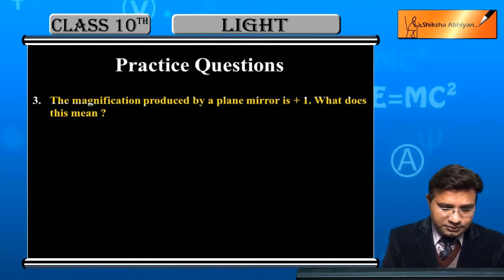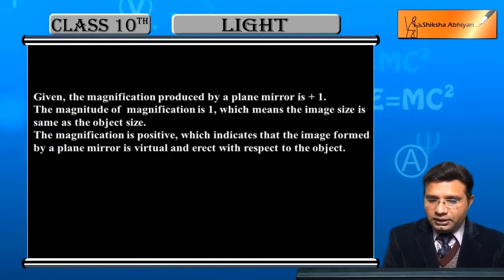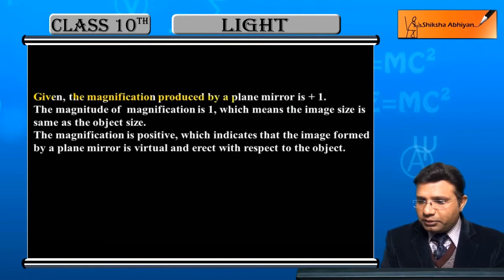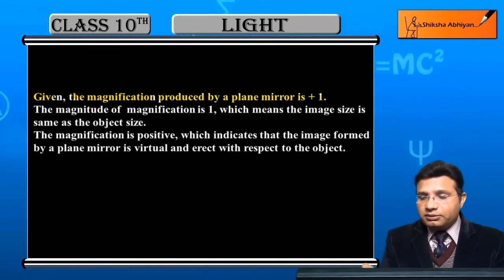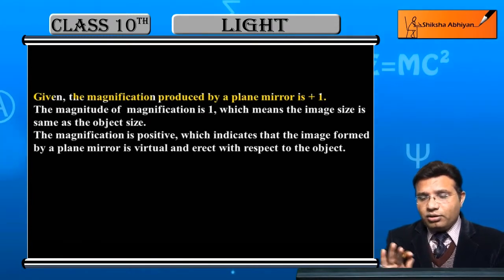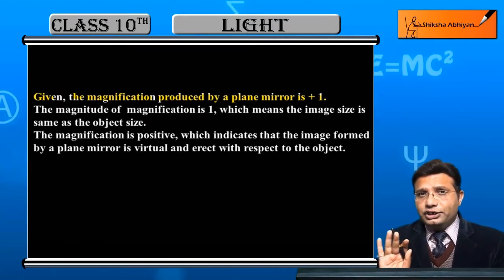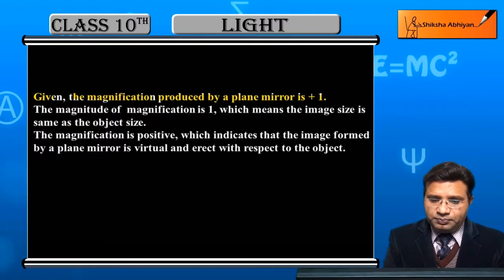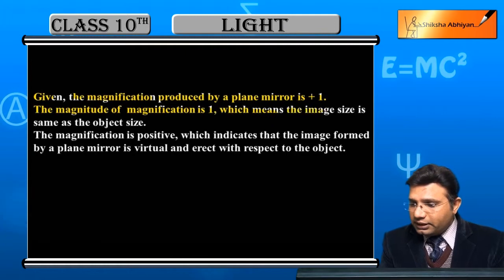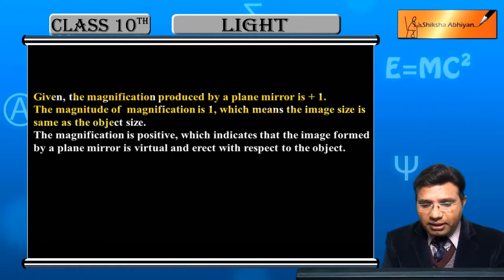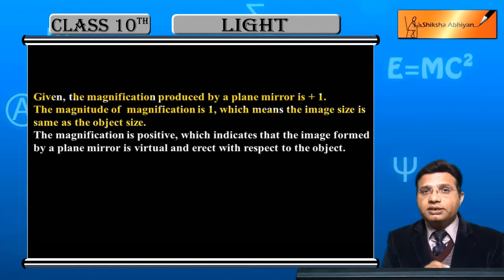So let's see the answer. Given: the magnification produced by a plane mirror is plus 1. Plus 1 — the sign of magnification is positive and the value is 1. The magnitude of magnification is 1, which means the image size is the same as the object size.